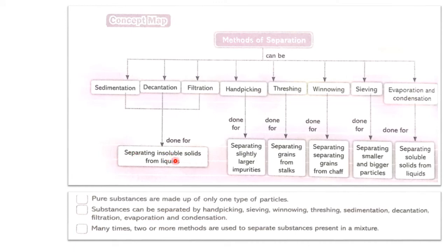Threshing is used for separating grains from stalks. Winnowing is used for separating grains from chaff. Sieving is used for separating smaller and bigger particles. Evaporation and condensation are used for separating soluble solids from liquids. These are the things we have learned in the separation of materials.